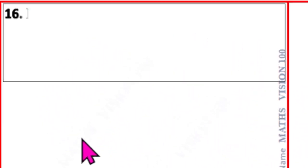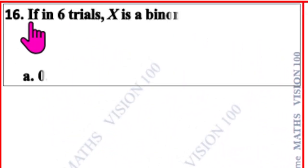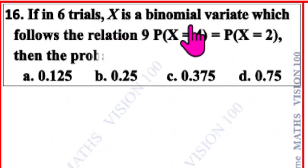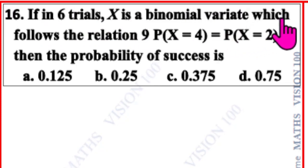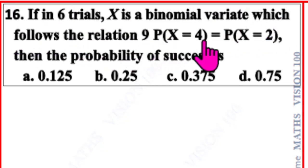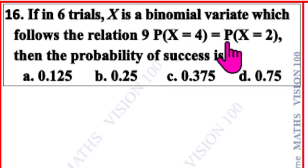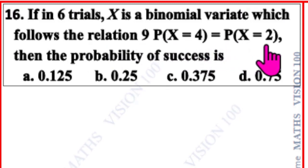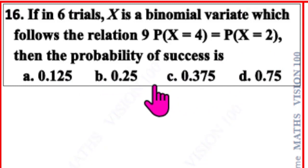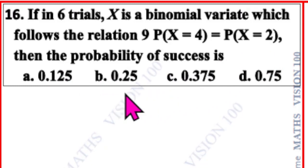Question number 16. In six trials, x is a binomial variate which follows the relation 9 × P(x = 4) = P(x = 2). Then the probability of success is — correct option is B: 0.25.